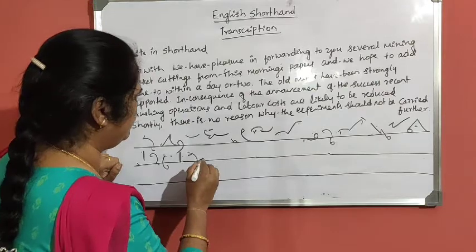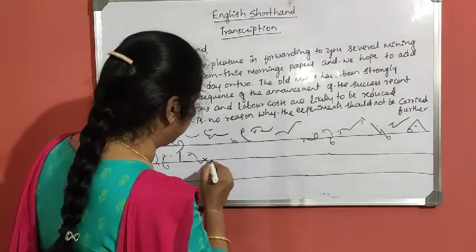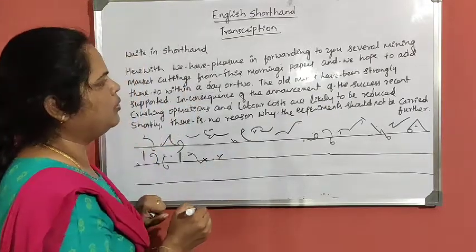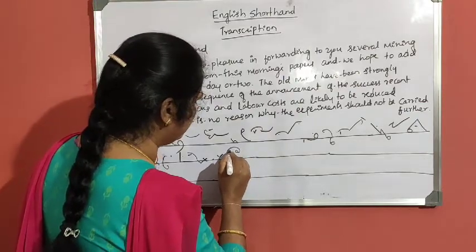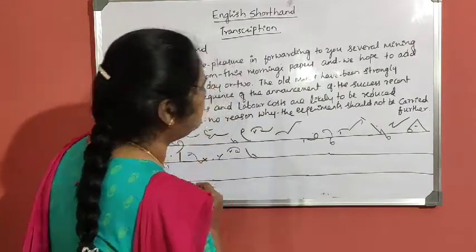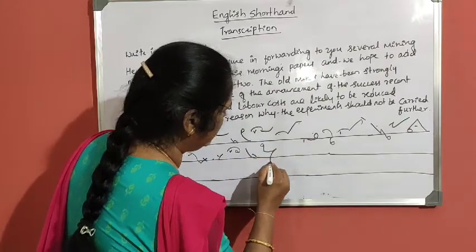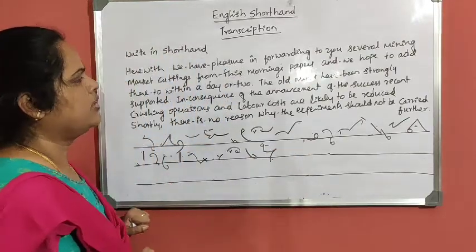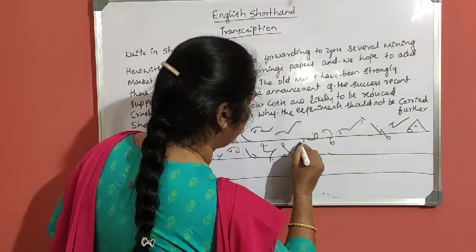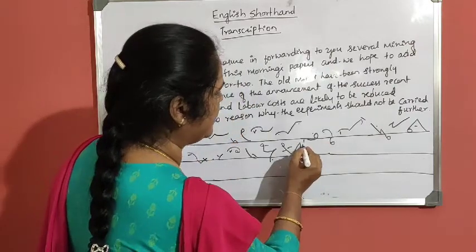Then full stop. This sign indicates full stop. The old — minus — the grammar log. Old: L is all for D sound, oval minus. Young with N circle is minus. Have been — 'have been' phrase. Strongly: circle is T, in L — strongly. Then supported: circle is P or T is hollow. This is oval here — O. Supported. T is hollow for D sound.